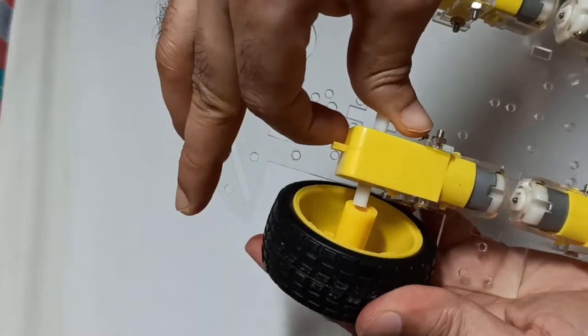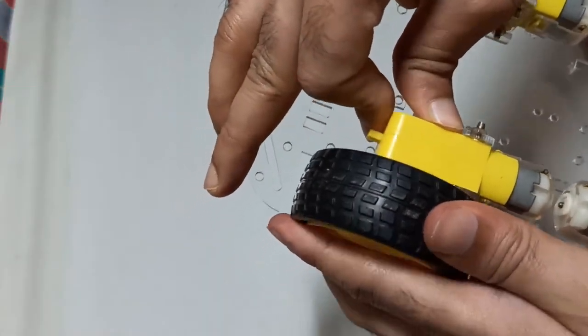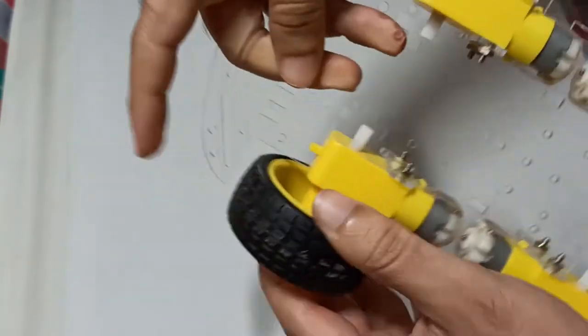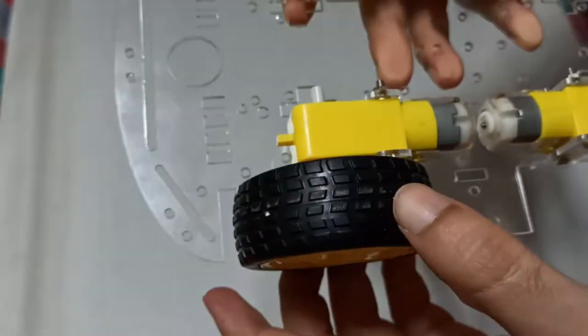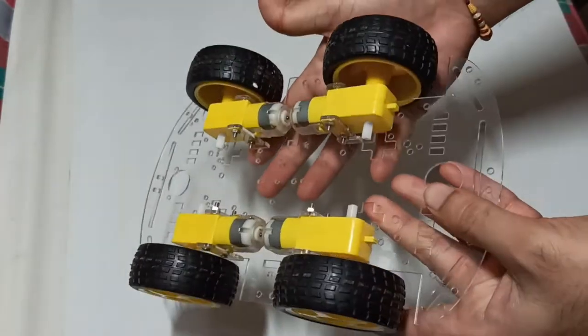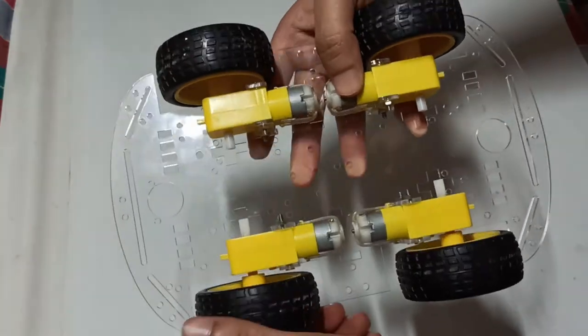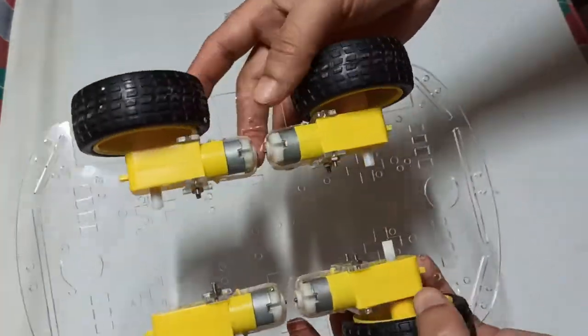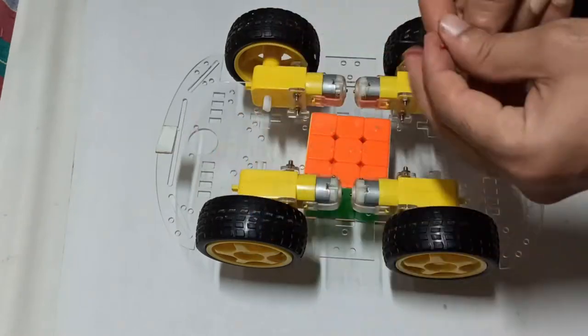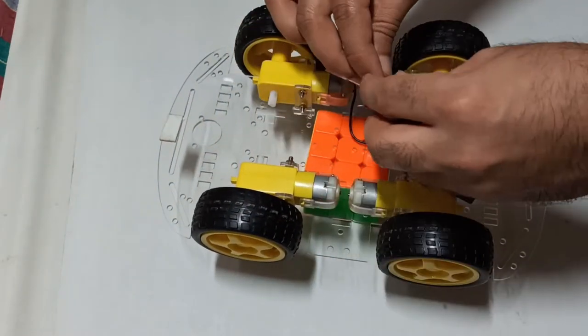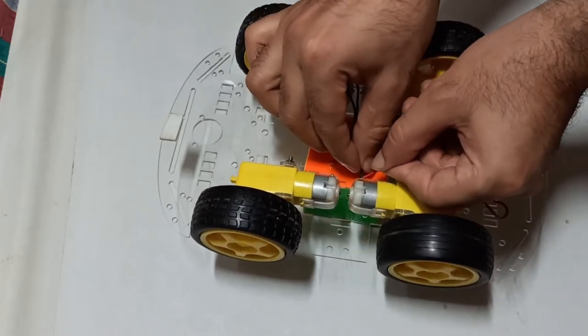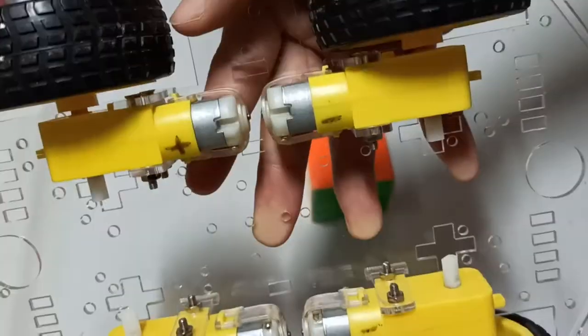Let's attach the wheels now. Before attaching the top part, check the directions of the motor using the single lithium-ion battery so that we can connect them in parallel.